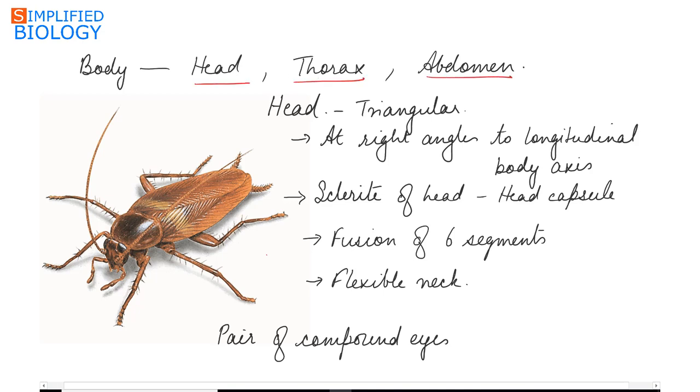We'll start with the head. Head, as you can see, is triangular in shape and is at right angle to the long axis of the body. The head is covered by the chitinous exoskeleton or sclerites present at the head forming the head capsule.